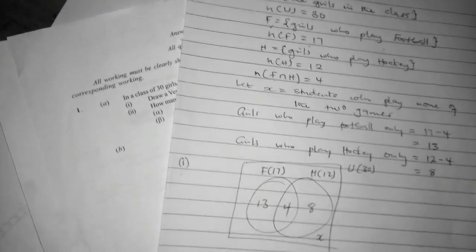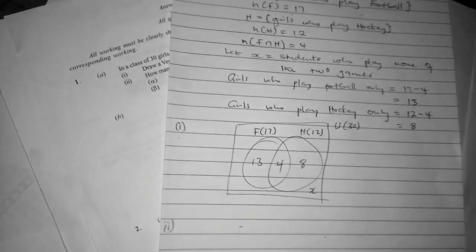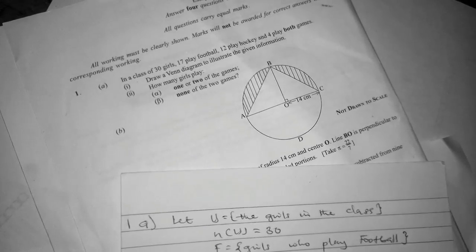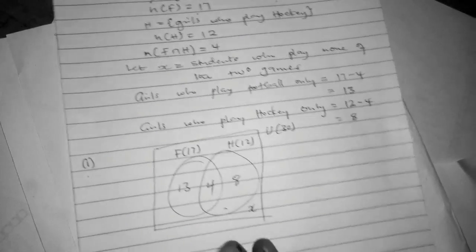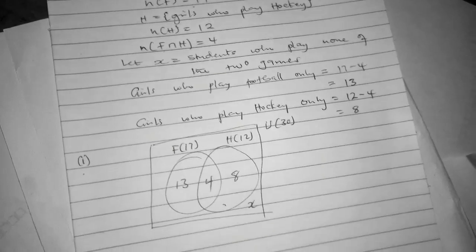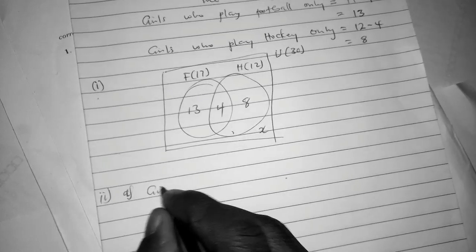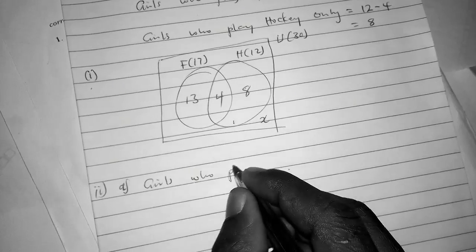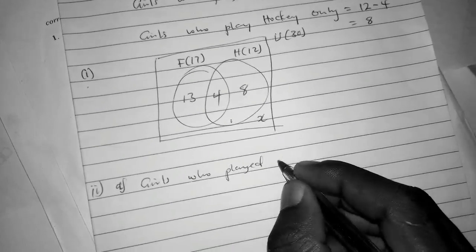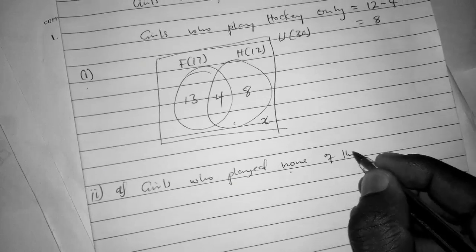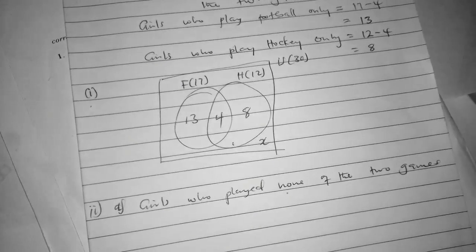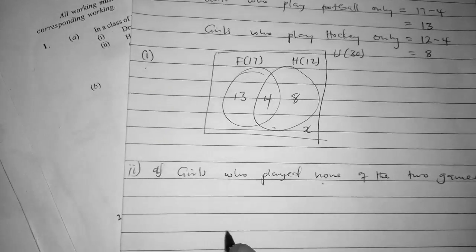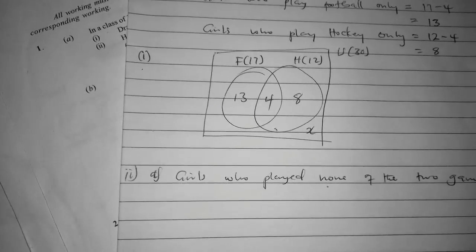Part (i): How many girls play none of the two games? That's what we're coming to find now. If I add what is in the rectangle, it must equal the universal set.